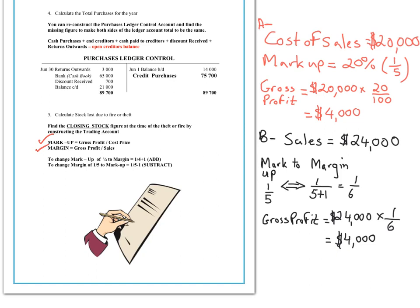The markup is the gross profit expressed as a percentage of the cost price, whereas the margin is the same gross profit but expressed as a percentage of your sales. For example, if the cost of sales was $20,000 and the markup is 20%, then 20% of that cost of sales is your gross profit. Since 20 over 100 equals one-fifth, to work out our gross profit we take $20,000 and multiply by one-fifth, which gives a gross profit of $4,000.